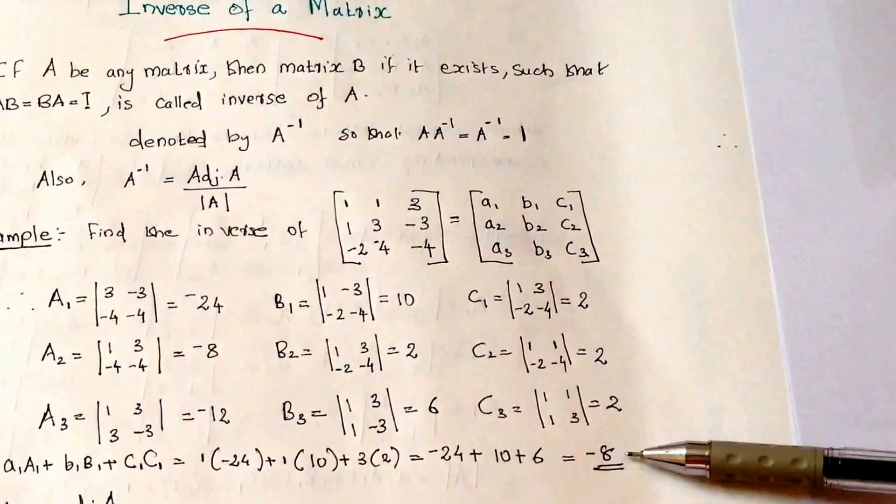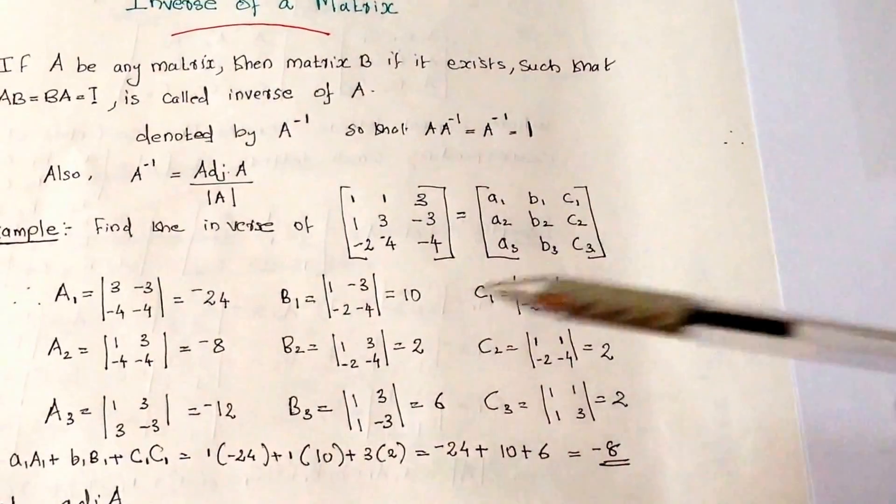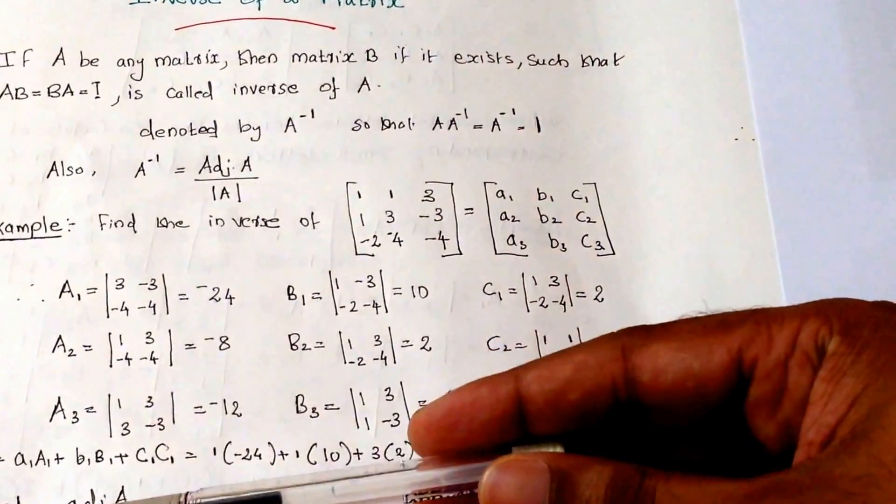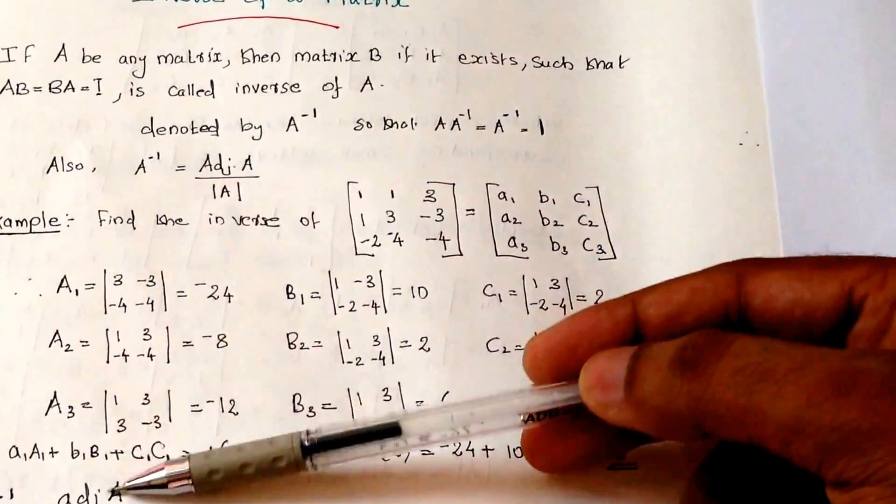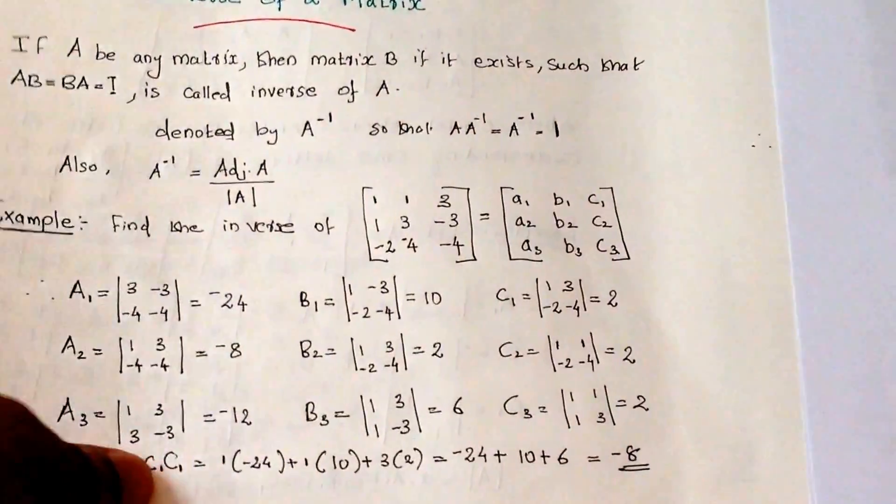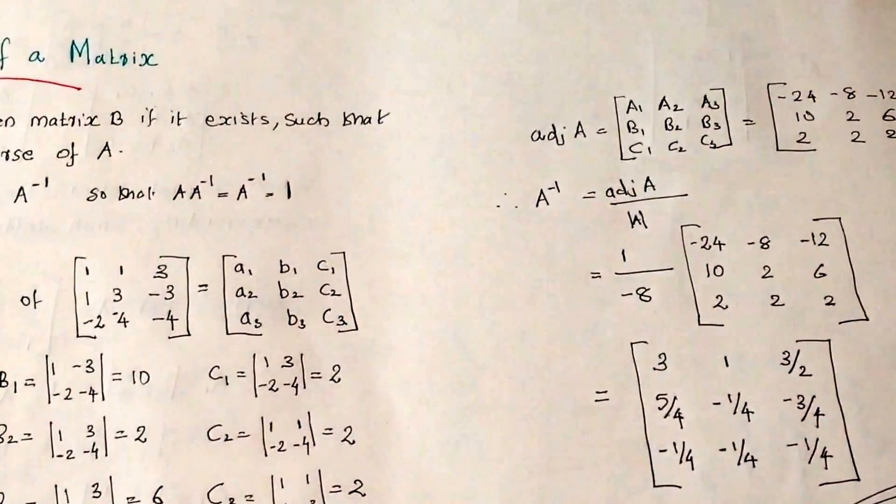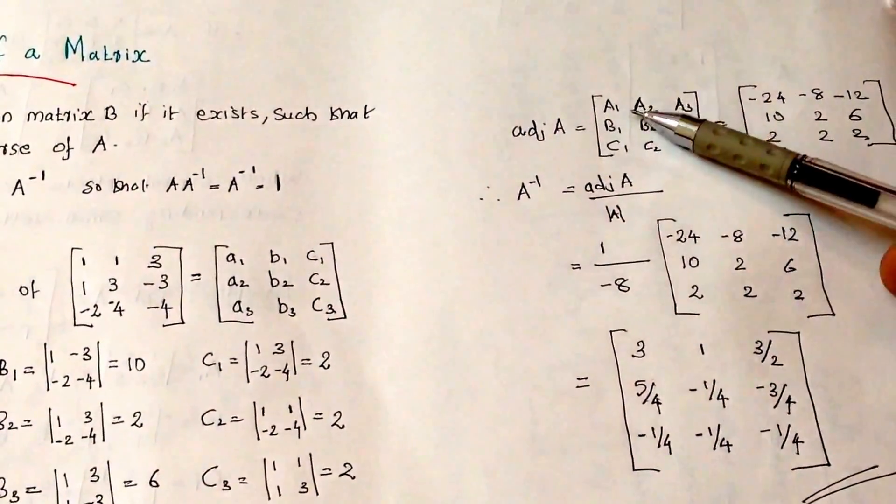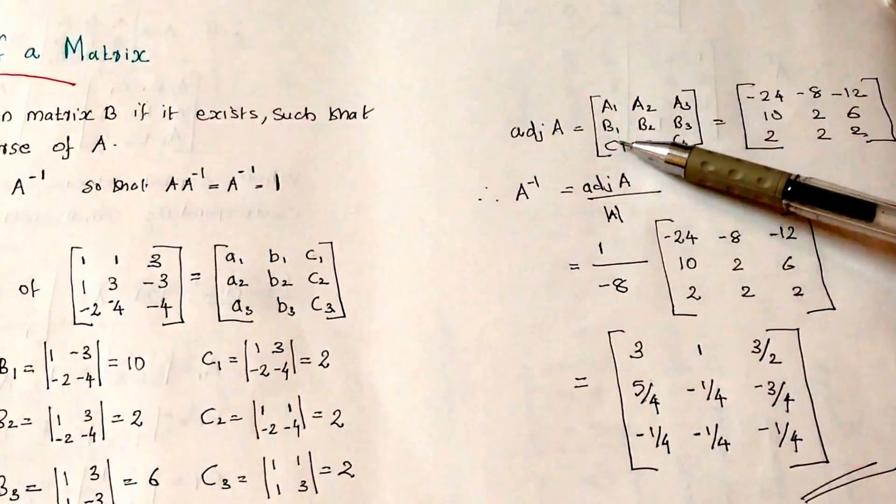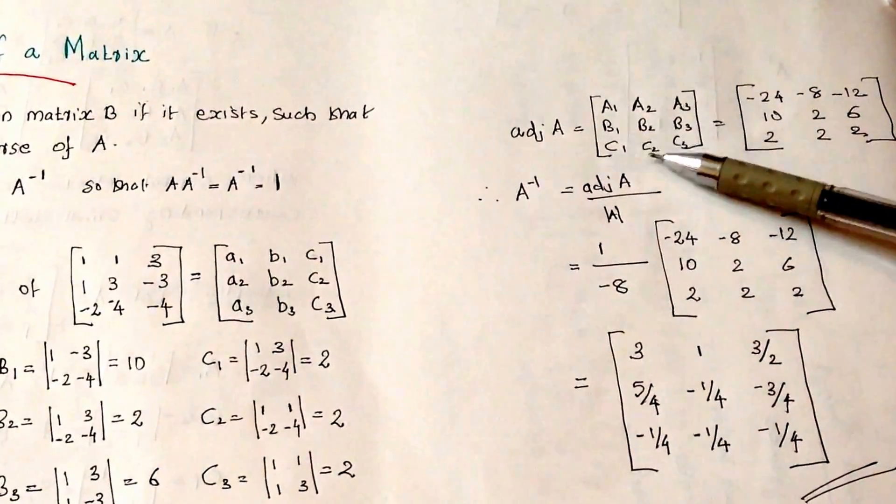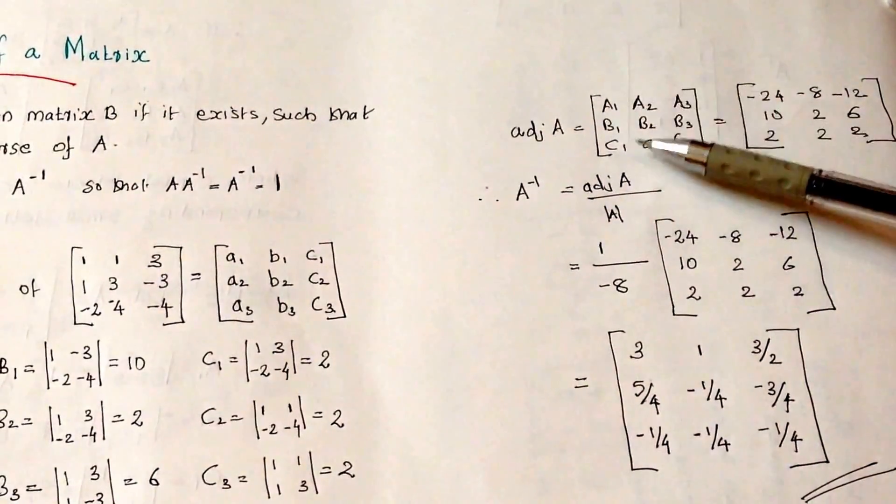So we got the cofactors. Therefore A inverse equals adjoint A by determinant A. Whatever cofactors we got, a matrix will be formed. Adjoint A equals A1 to A3, B1, B2, B3, and C1, C2, C3.